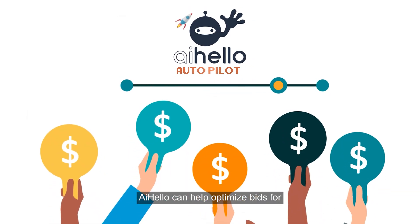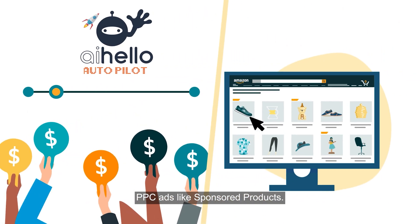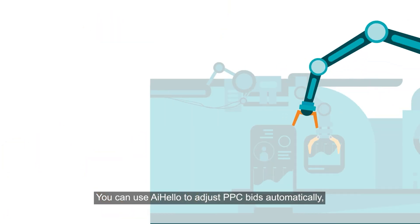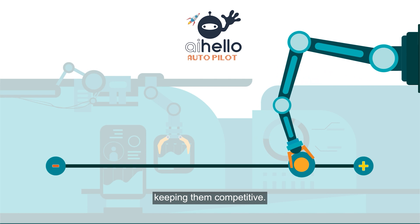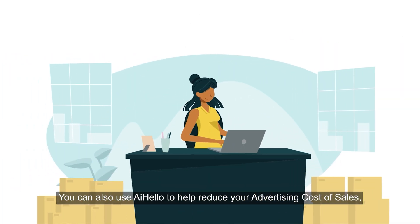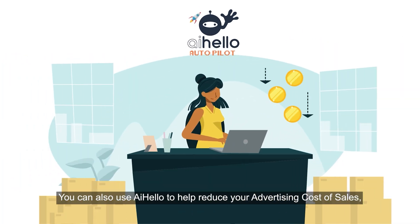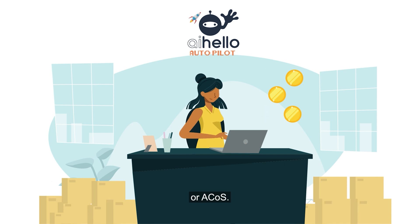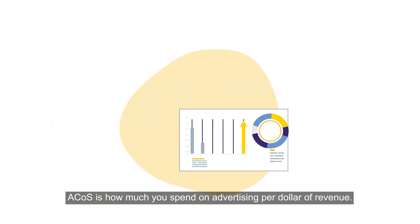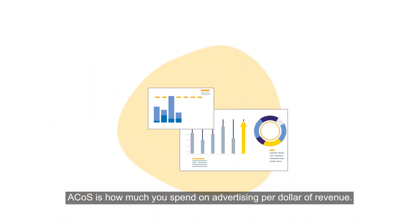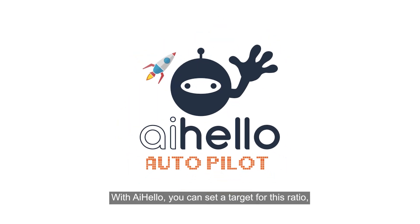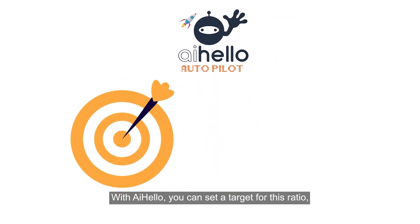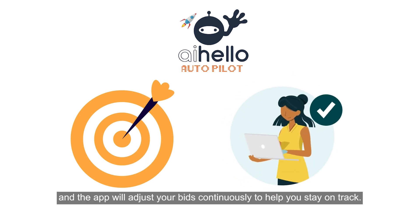iHello can help optimize bids for PPC ads like sponsored products. You can use iHello to adjust PPC bids automatically, keeping them competitive. You can also use iHello to help reduce your advertising cost of sales, or ACOS. ACOS is how much you spend on advertising per dollar of revenue. With iHello, you can set a target for this ratio, and the app will adjust your bids continuously to help you stay on track.